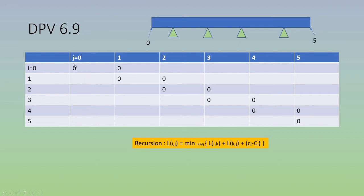Before diving into the solution, we need to look at initialization. We start with smaller sub-problems near the diagonal. The exact diagonal is zero — if you start and end at the same point, no cutting is needed. Similarly, adjacent entries like l_01 and l_12 are also zero, because those are already pre-cut segments with no further cutting choice.